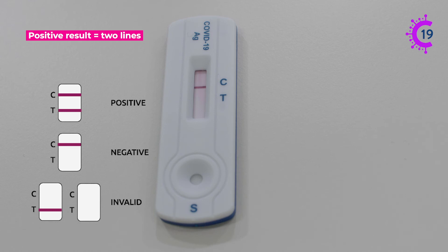If there is a positive test result there will also be a line visible at the T. Even if this line is very faint it means your test result is positive.